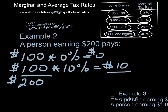If you take ten dollars and divide it by the total income of that person — two hundred dollars — you get five percent. And that's that person's average tax rate.